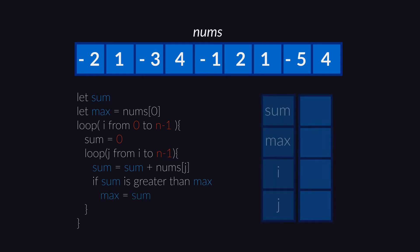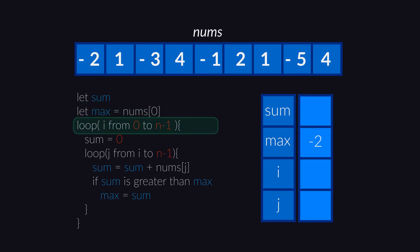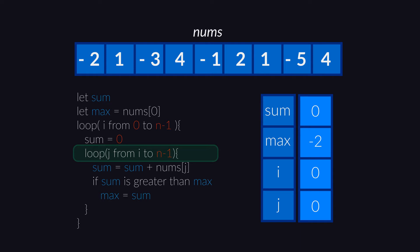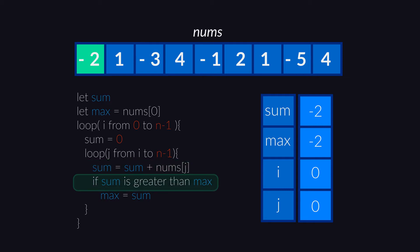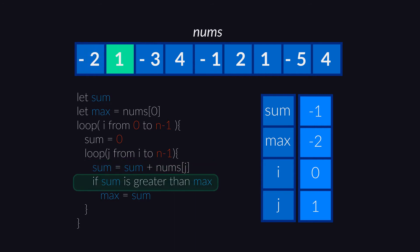Let's do a run-through of the pseudocode. At first sum has no value, and max has minus 2, which is the first element of the array. Then we enter the loop and the value of i updates to 0. After that sum equals 0 and in the inner loop j equals 0. Now the value of sum updates to sum plus the first element of the array, that is minus 2. We check if minus 2 is greater than minus 2, which is not true. So we go to the second iteration of j — j is 1 now. Sum equals minus 2 plus 1, which is minus 1. Minus 1 is greater than minus 2, so max equals minus 1.